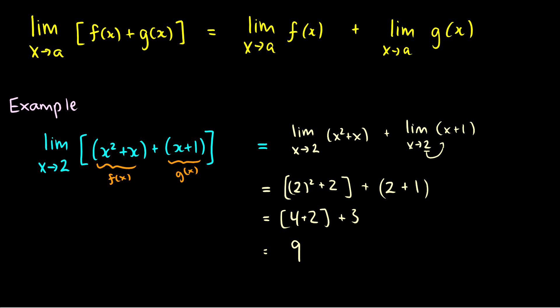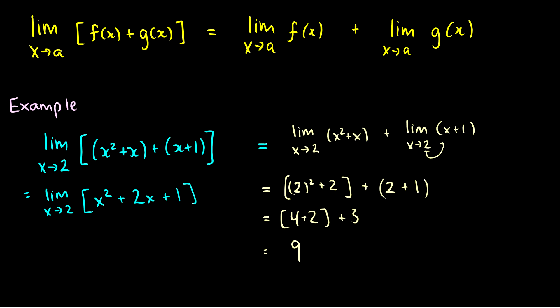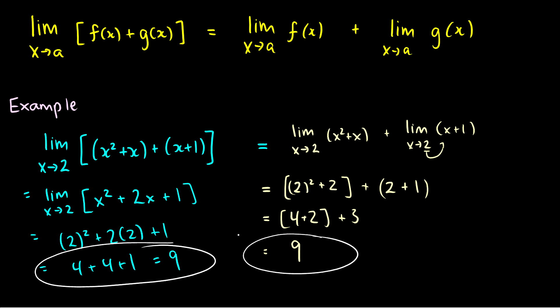Now let's add these functions together. Simplifying x squared plus x plus x plus one gives us x squared plus two x plus one. Now we've combined the functions — this is f of x plus g of x. Taking the limit as x goes to two, we just plug in two: two squared plus two times two plus one equals four plus four plus one, which is equal to nine. So these are equal. In a later course you would prove the limit laws using the definition formally, but we can see here that we can take the limit either together or separately and it'll come out exactly the same.